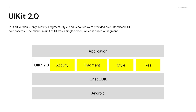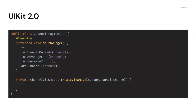In UIKit version 2, only activity, fragment, style, and resources were provided as customizable UI components. The minimum unit of UI was a single screen, which is called a fragment.